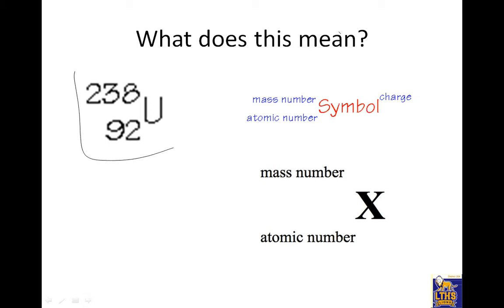So if I see this, what do these numbers mean? You should be writing down this example so you have this. This top number is the mass. This bottom number is the number of protons, which is also called the atomic number. The way you determine the mass is mass equals protons plus neutrons.